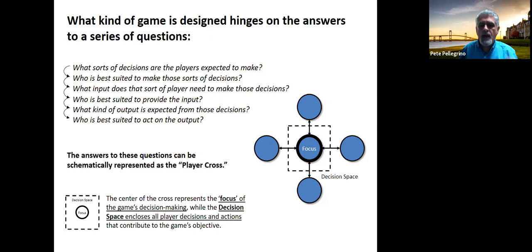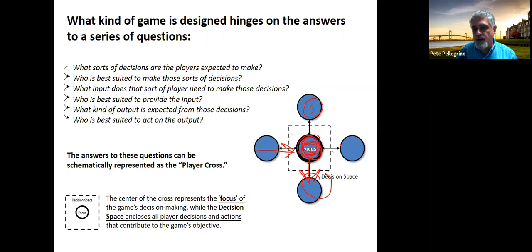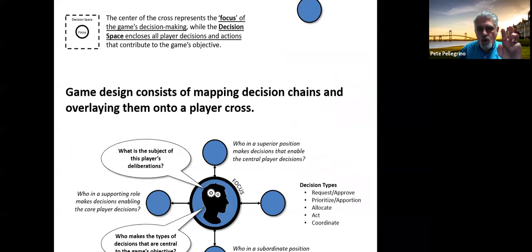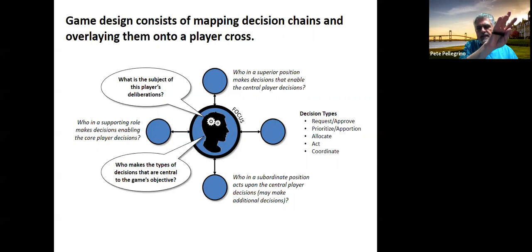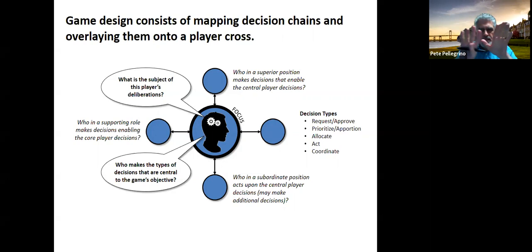When we plot all this out, the simplest form is what we call the player cross: key players in the center, a superior source of information above them, subordinate sources of action below, and lateral partners providing support. Where we draw the box decides who's a player and who's in a supporting role — and determines the level of complexity, scale, and scope the game will require. Focusing on what decisions need to be made tells you who you need, and then you start bringing a process chart on top of an organizational chart.